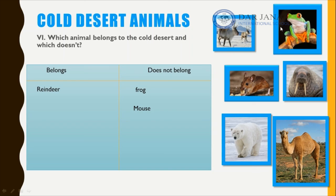The walrus has thick layers of fat called blubbers, which help it stay alive in cold areas — so it belongs to the cold desert. The camel lives in the hot desert, not the cold desert, so it goes with the frog and mouse. Finally, the polar bear is white, has thick fur, and can live among ice and snow — so it belongs to the arctic habitat.